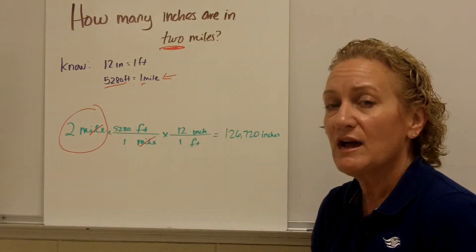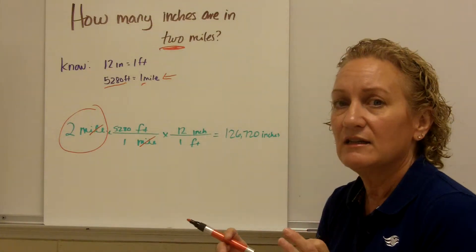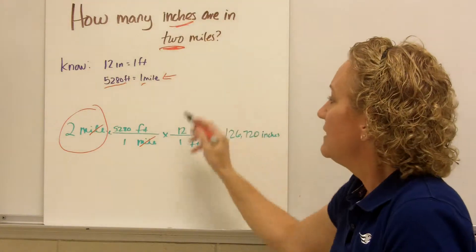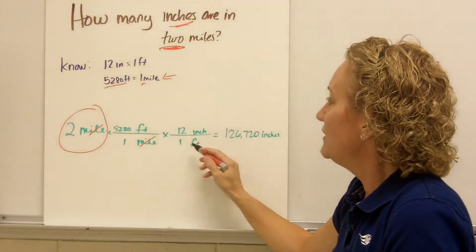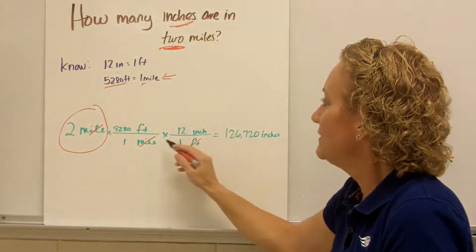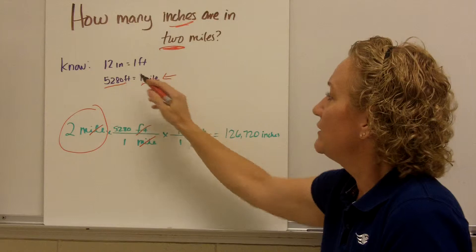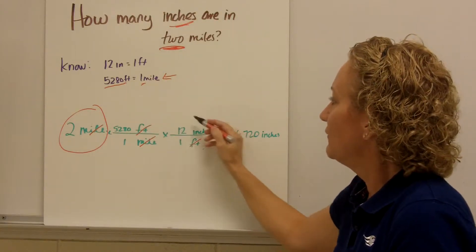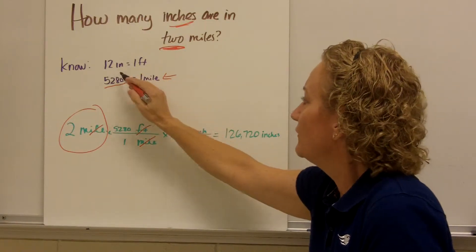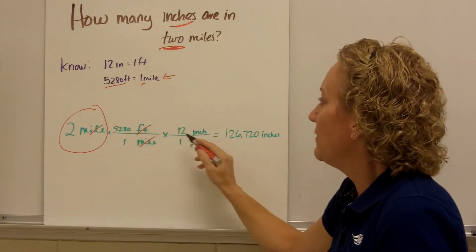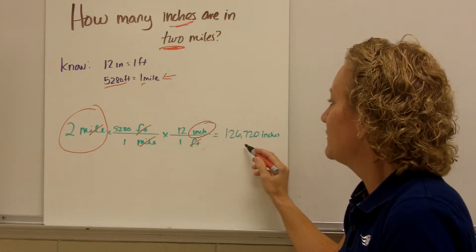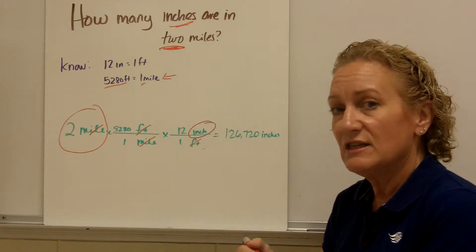So now I have it in feet, but I want it inches. So I'm going to convert feet to inches. Again, feet is in the numerator. It needs to be in the denominator so that it cancels out. My conversion from feet is feet to inches. This is the equivalent of one. So one foot is 12 inches, one next to the foot, 12 next to the inch. And I take 2 times 5280 times 12. I'm left with inches, and I get 126,720 inches in two miles.